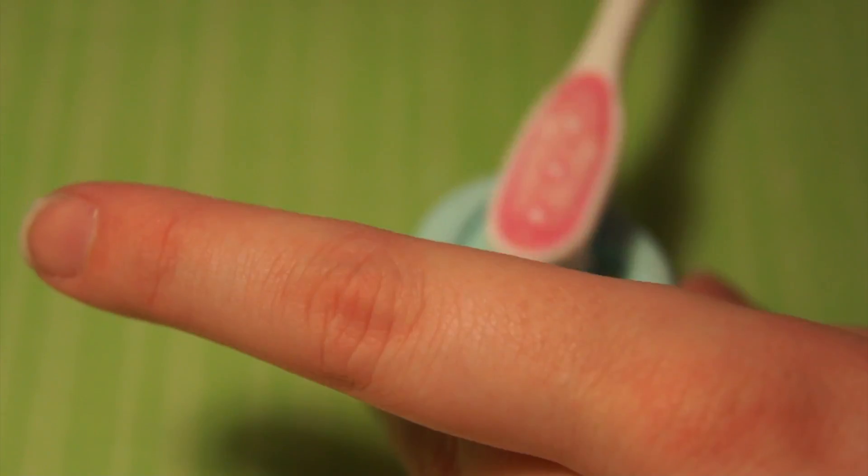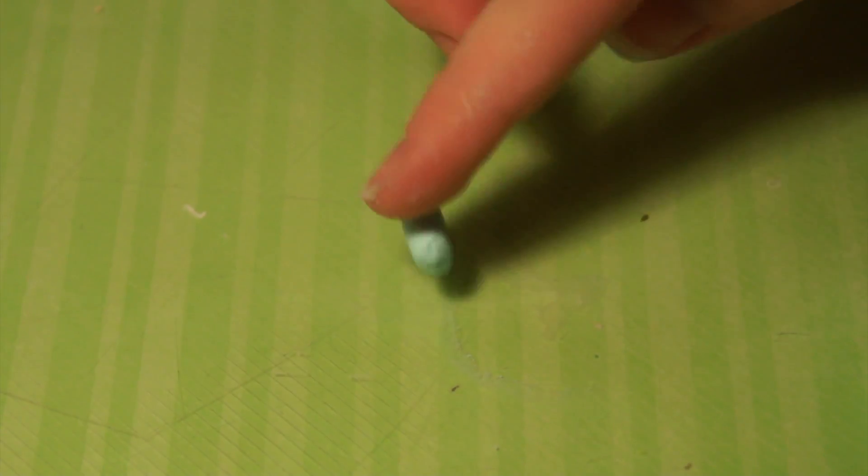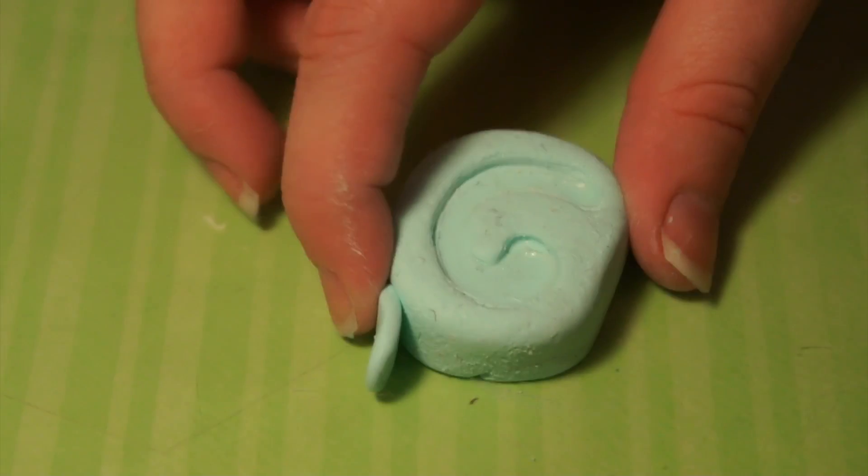Then for the lamb, I'm just going to use some mint colored clay by Fimo. For the ears, again I'm just going to roll out some logs and flatten them and then attach them to the head.